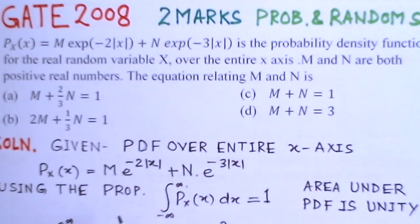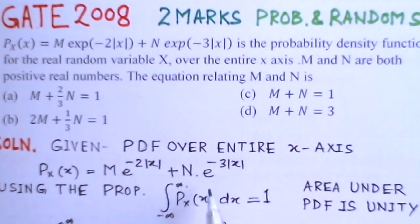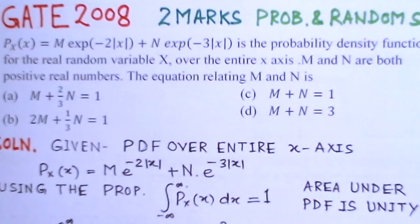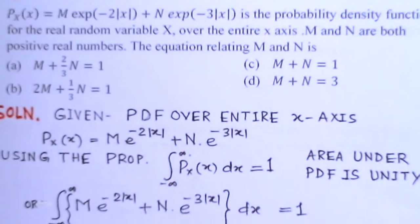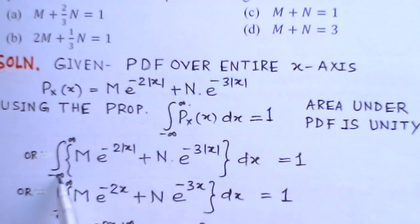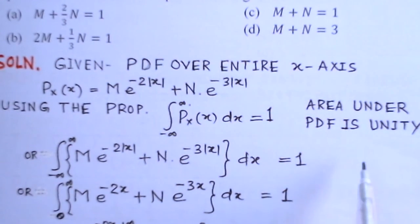We start with the solution. Given is the PDF over the entire x-axis. To get the relation between m and n, we use the important property that the area under the probability density function is unity — that is, the integral from minus infinity to plus infinity of p(x) dx equals 1. Substituting: integral from −∞ to ∞ of [m·e^(−2|x|) + n·e^(−3|x|)] dx = 1.